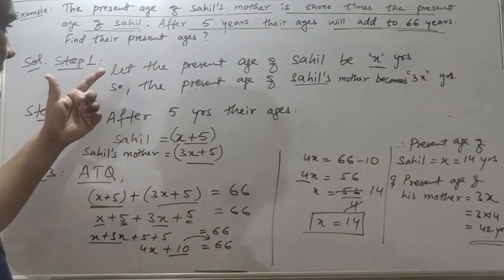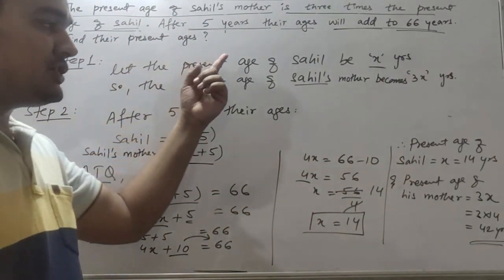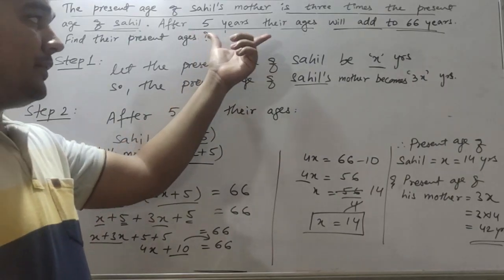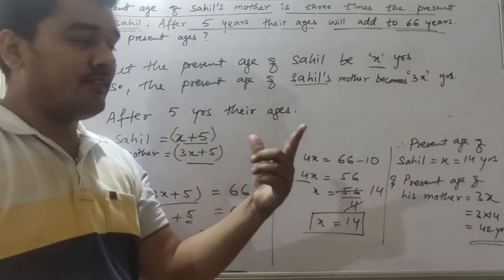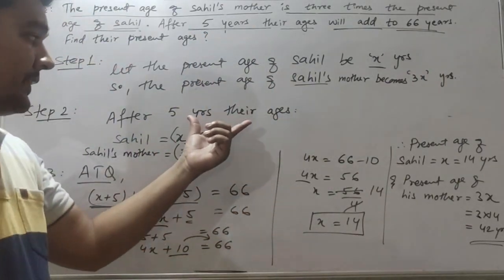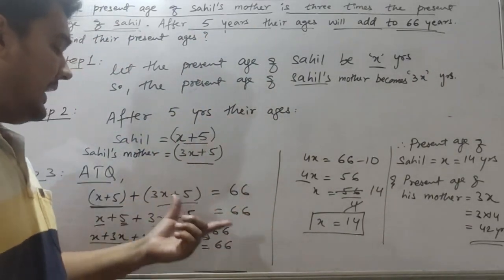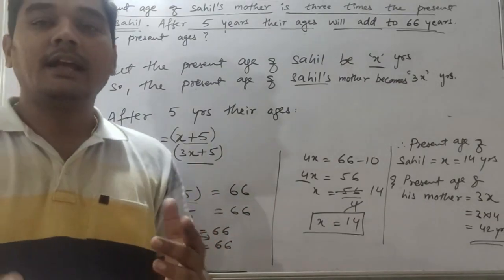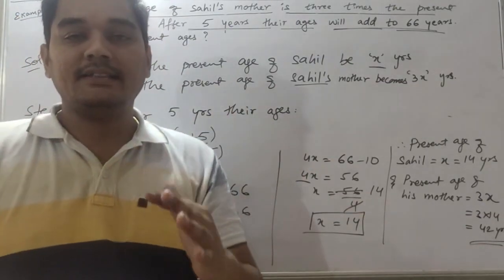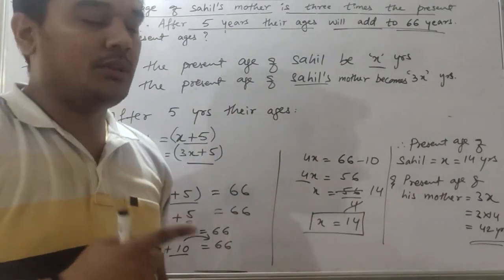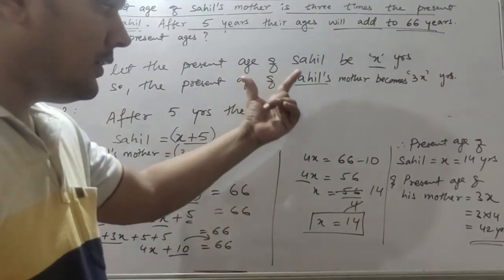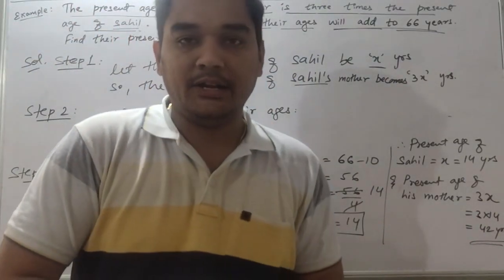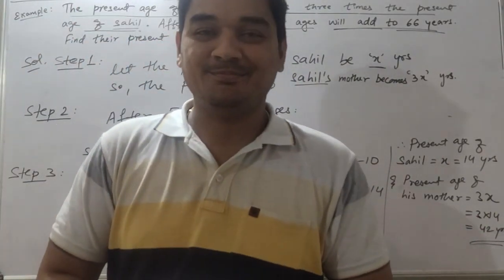Remember the three steps: step one is assume the present age; step two is find the ages after or before as given; and step three is compare the ages according to the question. Thank you all.